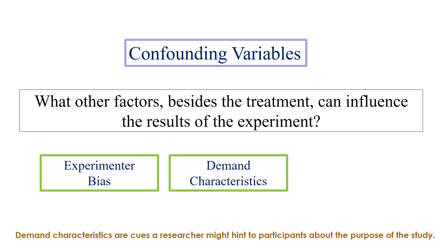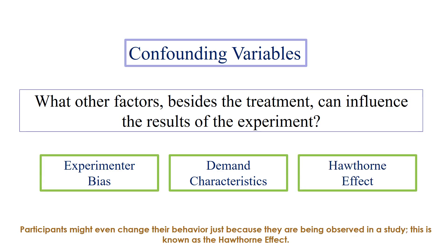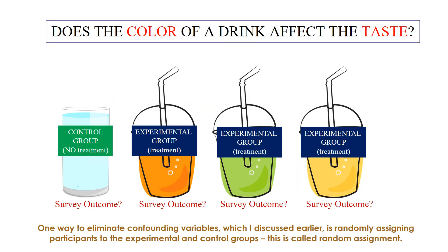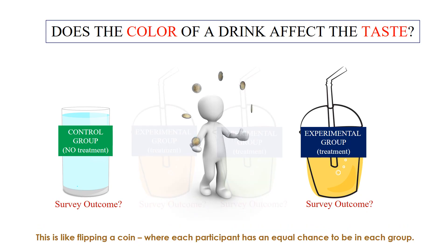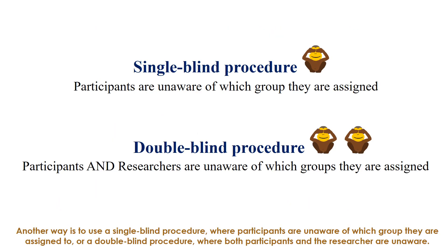Demand characteristics are cues a researcher might hint to participants about the purpose of the study. Participants might also change their behavior simply because they are being observed — this is known as the Hawthorne effect. One way to eliminate confounding variables is randomly assigning participants to groups, called random assignment, where each participant has an equal chance of being in each group — like flipping a coin. Another way is to use a single-blind procedure, where participants are unaware of which group they are in, or a double-blind procedure, where both participants and the researcher are unaware.